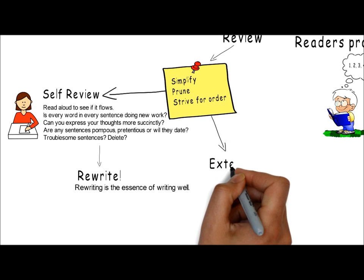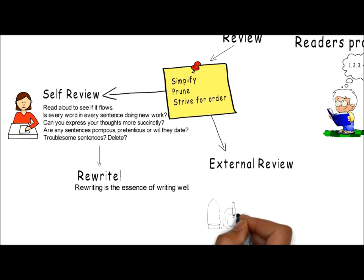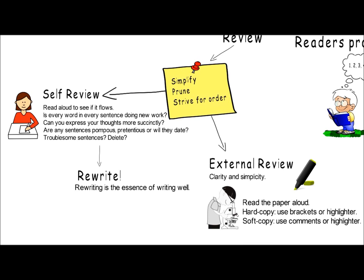An external review by a peer or supervisor is just as important as the self-review. The focus of the peer or supervisor review is to look for clarity and simplicity, highlighting areas that the writer can re-attack to make clearer or simpler. Read the paper aloud. If working with a hard copy, use brackets with a colour pen to highlight clutter that can be cut. If using a soft copy, use a comment to suggest better ways of wording sentences and the highlighter to highlight clutter. Be sensitive in offering feedback — all writers are vulnerable in their writing.